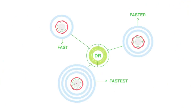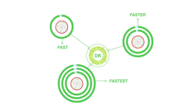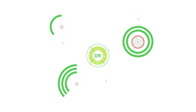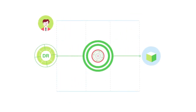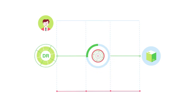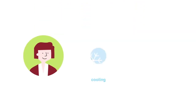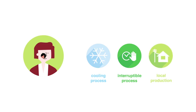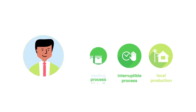The idea behind DR is that you don't always need to go full speed to get where you're going. Take Richard. He has production targets, but he doesn't need to be running full steam 100% of the time to reach them. He can adjust his energy consumption temporarily, meet his target, and generate extra revenue. DR works because, like Richard, every business has a measure of flexibility.